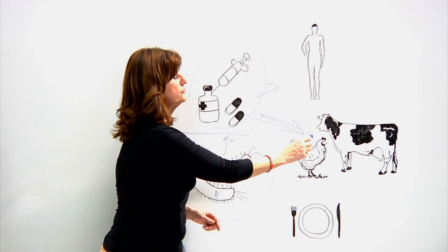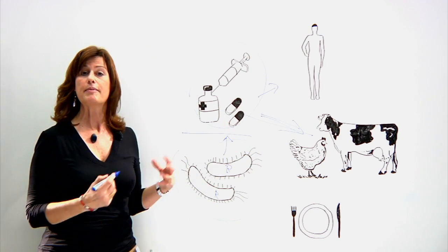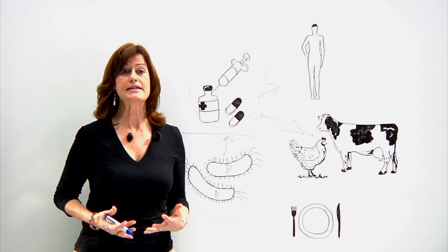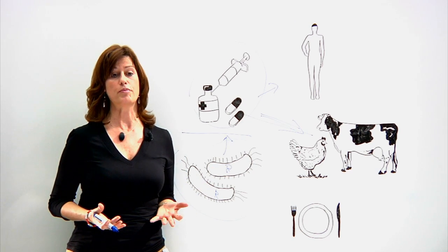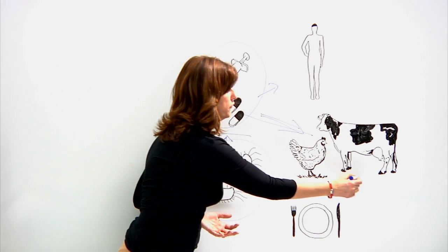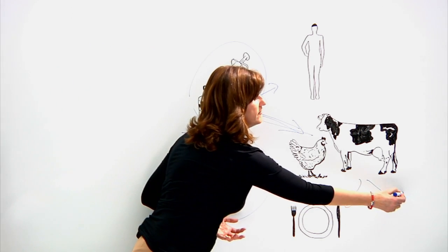Following the treatment of animals with antimicrobials, bacteria living in their gastrointestinal tract can become resistant to a given antimicrobial and can then contaminate food and the environment.